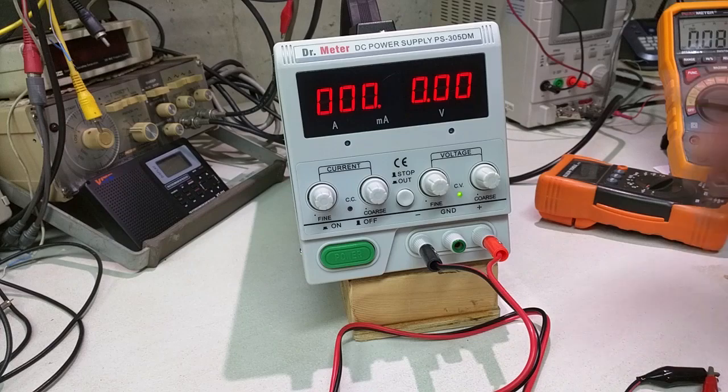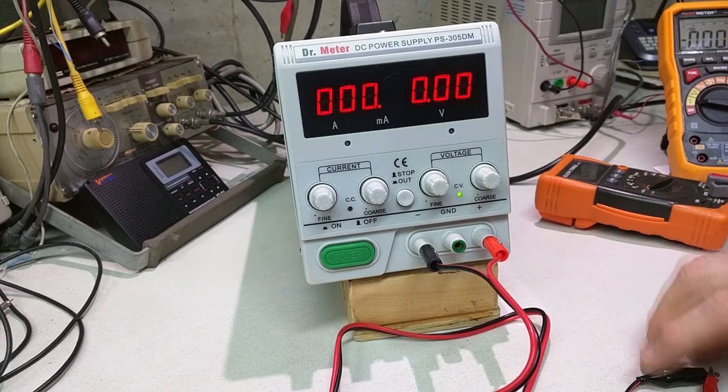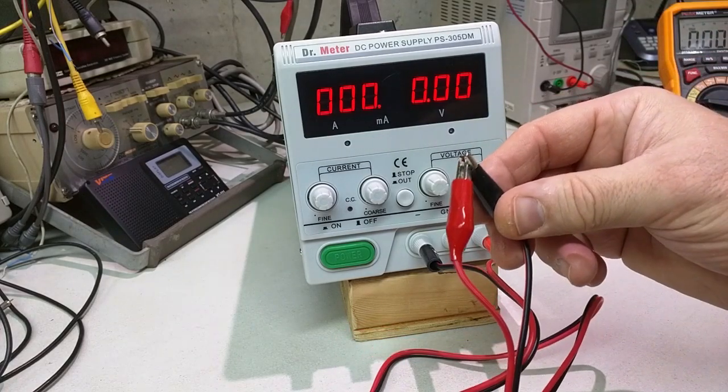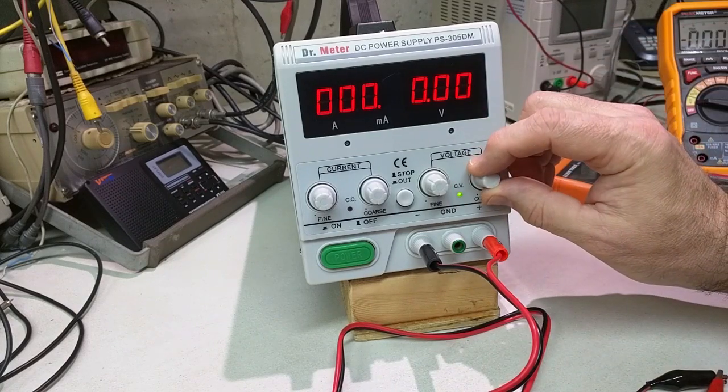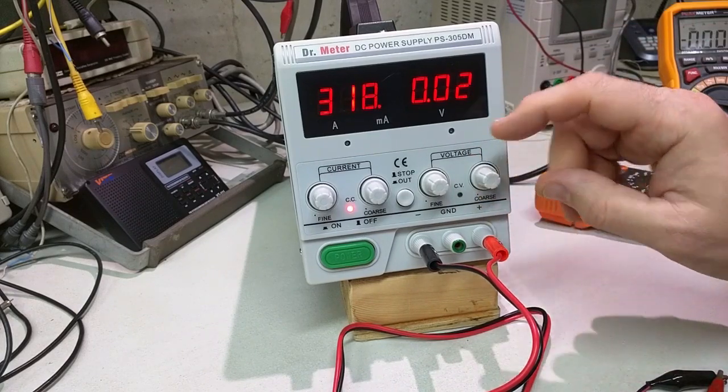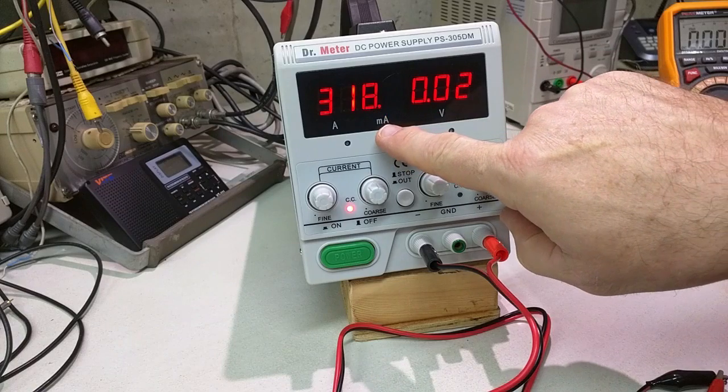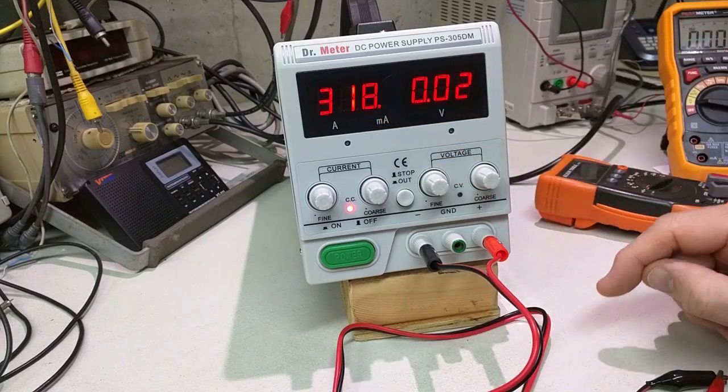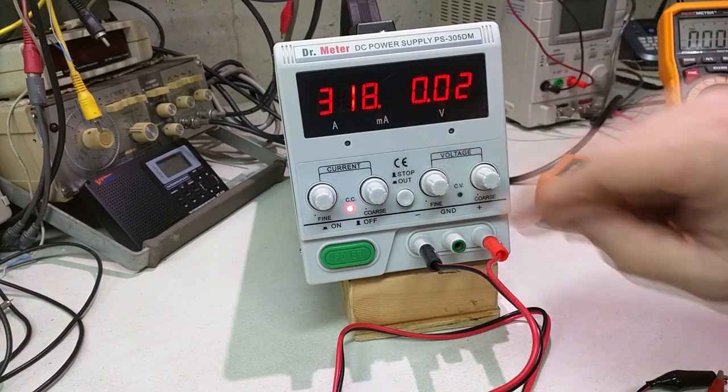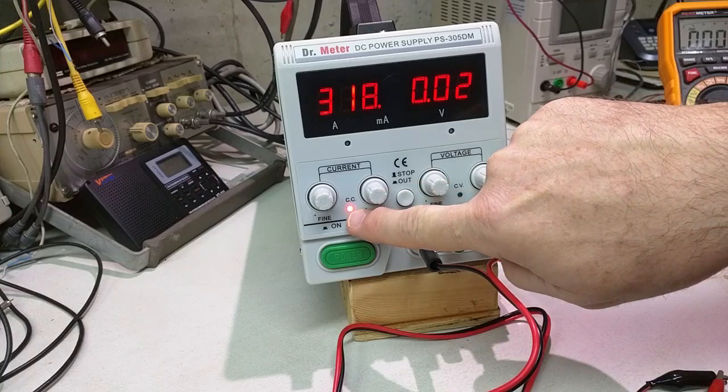So to do a constant current setup, I turn the power supply on, but first I shorted the leads right here. So I'm going to slowly bring the voltage up, and right now it's in milliamps. You can see it's 318 milliamps, because obviously it can't be amps. And you see the constant current light comes on.